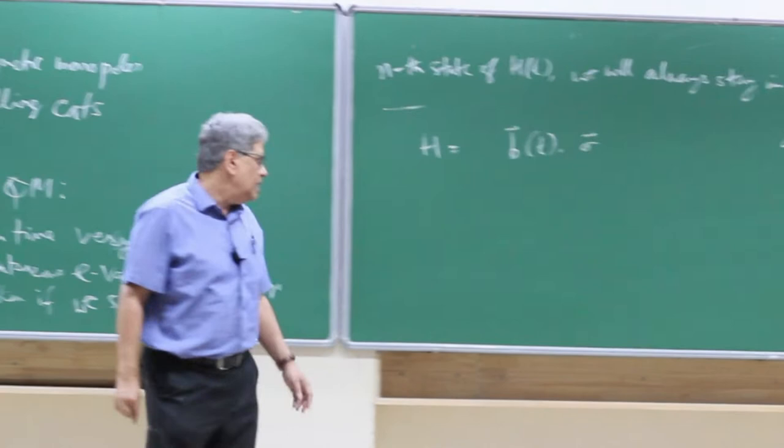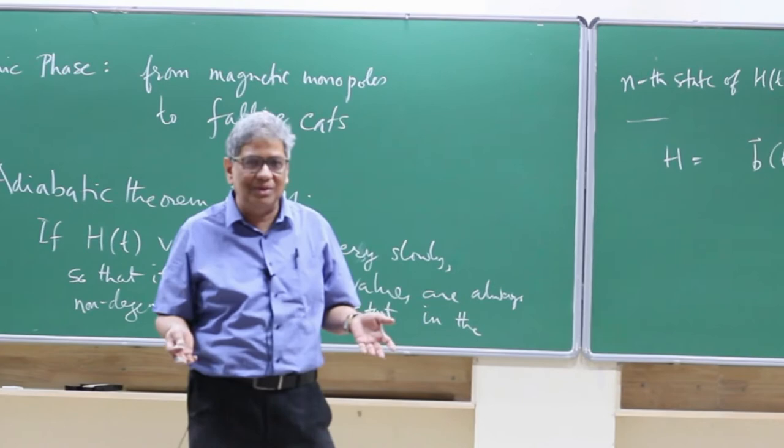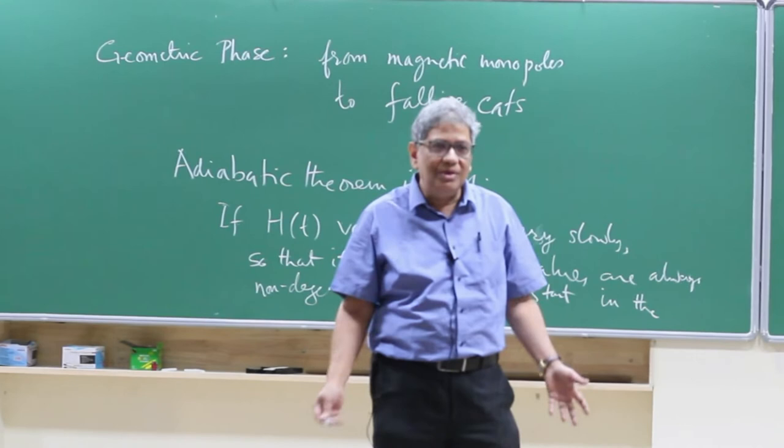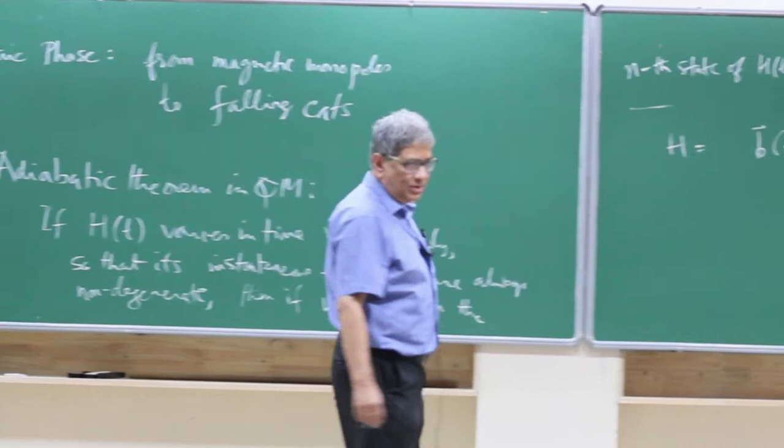This does not have to be a spin-half in a magnetic field. There are lots of two-level systems described by Hamiltonians of this kind. In fact, if you have a two-level system, the Hamiltonian has to be of this form because it must be a two-by-two Hermitian matrix — a linear combination of the Pauli matrices plus maybe the identity, which won't be important here.